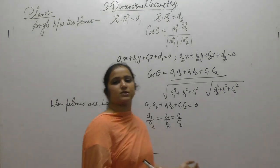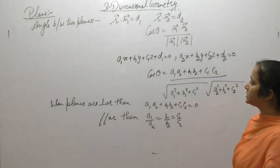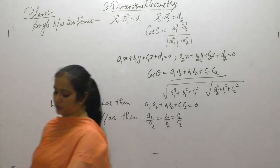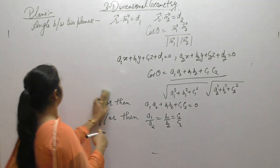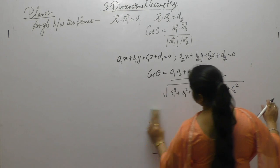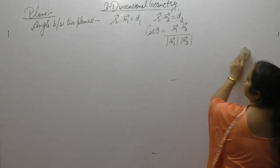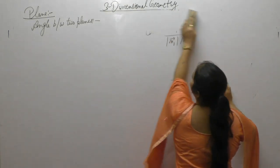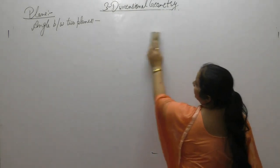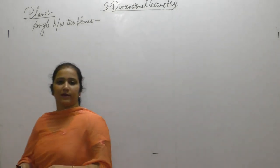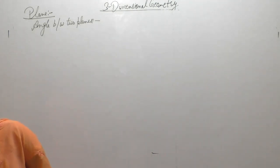Now by using these formulas we will solve the questions. When the vector form of planes is given, we use the formula cos theta equals N1 dot N2. When the Cartesian form is given, we use A1A2 plus B1B2 plus C1C2.